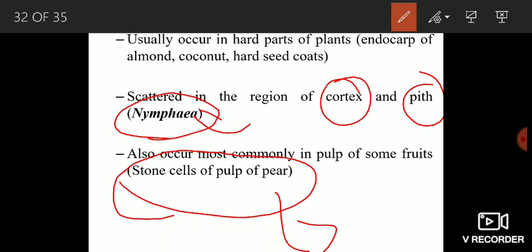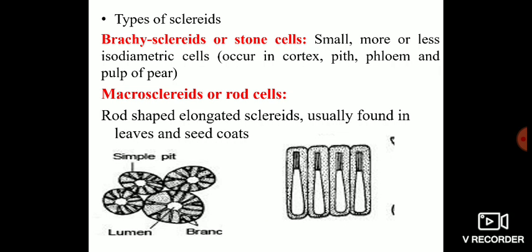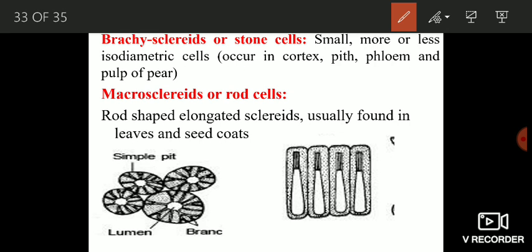These cells are actually the sclereids. Now the different types of sclereids. There are different types of sclereids and the first one is brachysclereids or stone cells. These cells are small more or less isodiametric cells and occur in cortex, pith, phloem and pulp of fruits. Here you can see these are the sclereids. These are isodiametric cells.